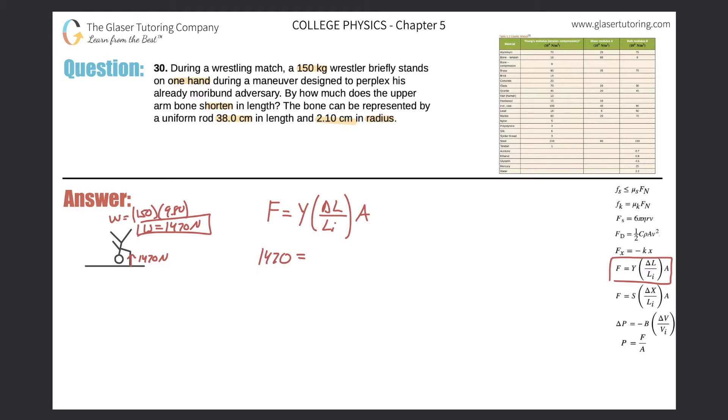Young's modulus now for compression, you have to be careful. Here's bone compression and now it's nine. Nine times 10 to the nine. And then the change in length is what we're after. The initial length they told us was 38 centimeters, but I need meters, so just move the decimal two places to the left. So 0.380.